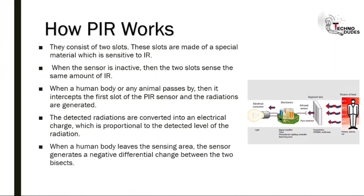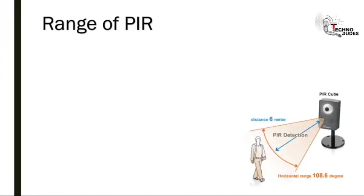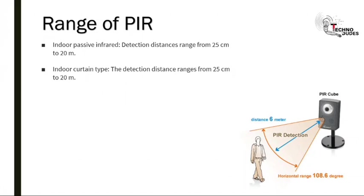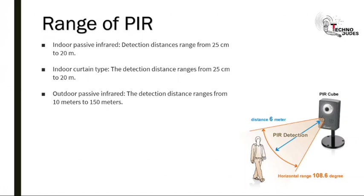When a human body leaves the sensing area, the sensor generates a negative differential change between the two bisects. Regarding the range: indoor passive infrared detection distance ranges from 25 cm to 20 meters; indoor curtain type also ranges from 25 cm to 20 meters; and outdoor passive infrared detection ranges from 10 meters to 150 meters.